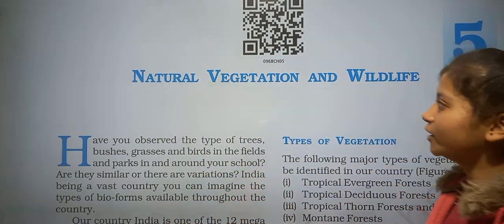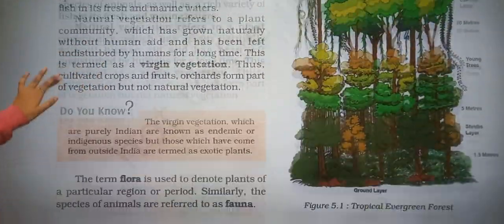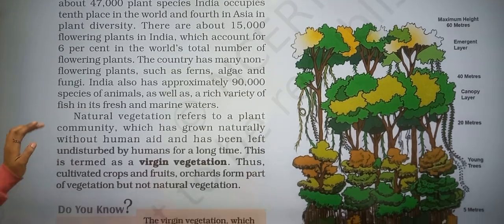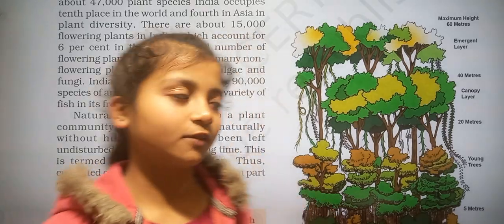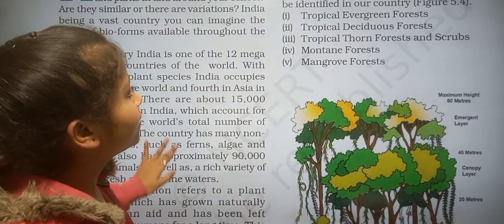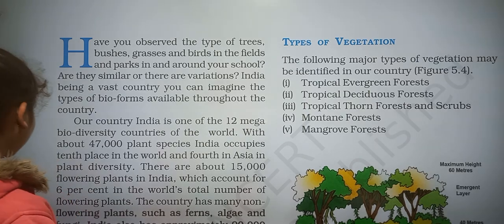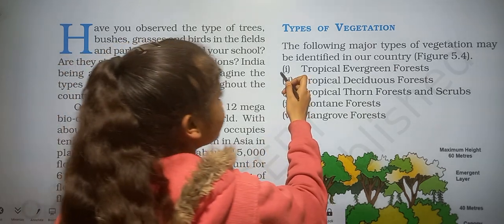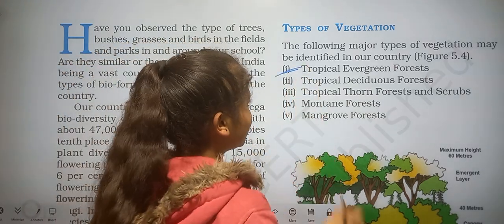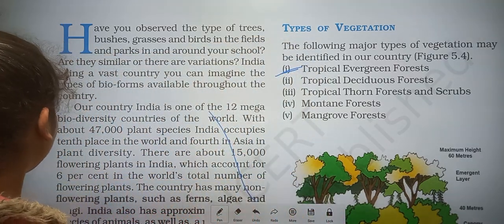In this video we will study about natural vegetation and wildlife. In the last video we already studied that natural vegetation refers to a plant community which has grown naturally without any human disturbance. We have also read about the tropical evergreen forest, and in this video we will discuss about the tropical deciduous forest.